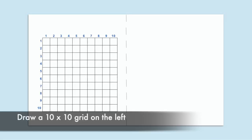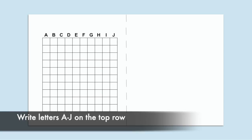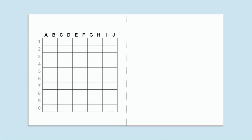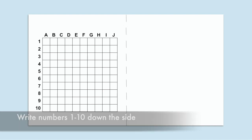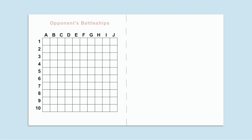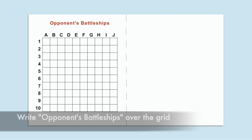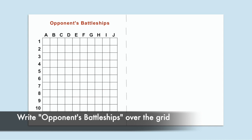They will then draw a 10 by 10 grid on the left side of the paper. On the top of the horizontal axis, they will write letters A through J, with each letter being placed over a square. On the vertical axis, they will write the numbers 1 through 10, with each number next to a square in the grid. Above the grid, write Opponents' Battleships.